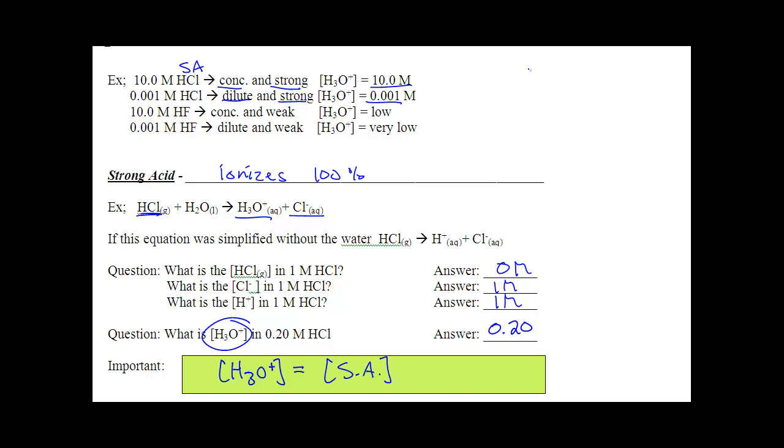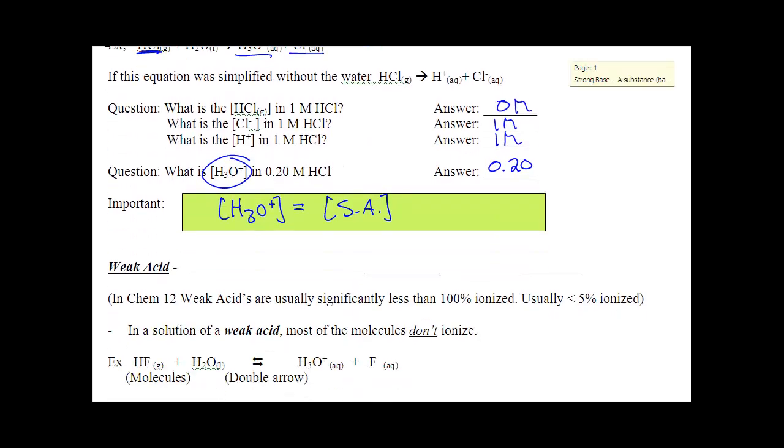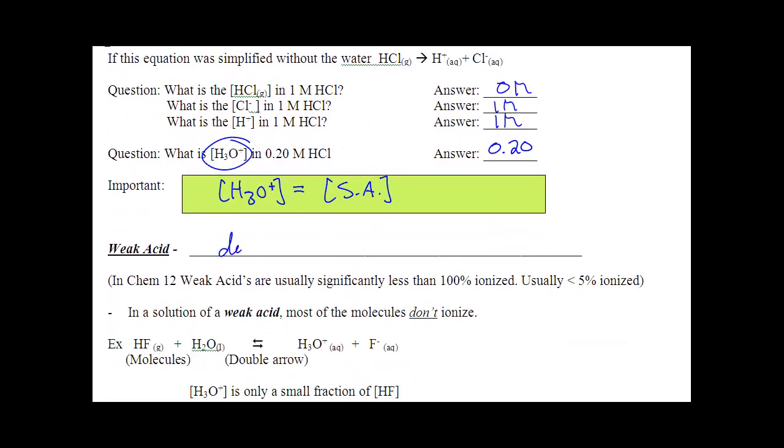Because your strong acid ionizes 100%. Your weak acid does not ionize 100%. In fact, it kind of ionizes less than 5%. So, there is no, like, 66% and 78%. It's 100% or less than 5%.